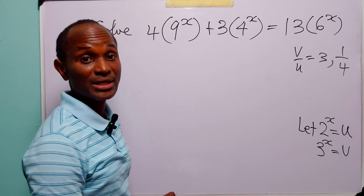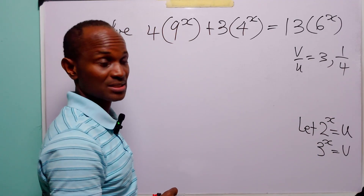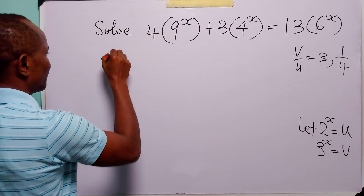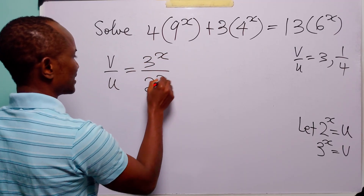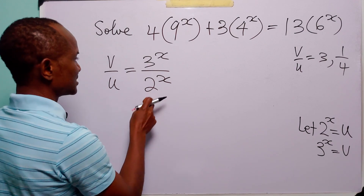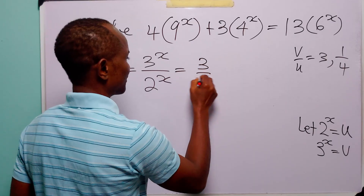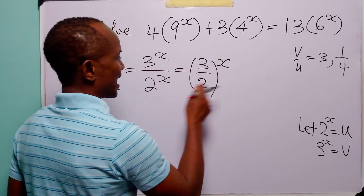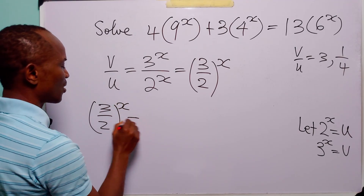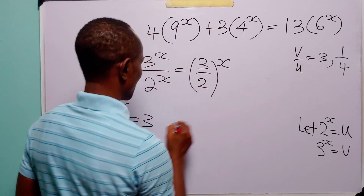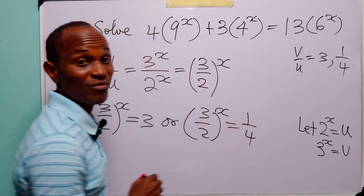Now that we have v over u equal to 3 or 1 over 4, we return to the substitutions. We have v over u equal to 3 to power x divided by 2 to power x. Since these two have the same exponent, we can combine them: so (3/2) to power x equals 3, or (3/2) to power x equals 1 over 4.